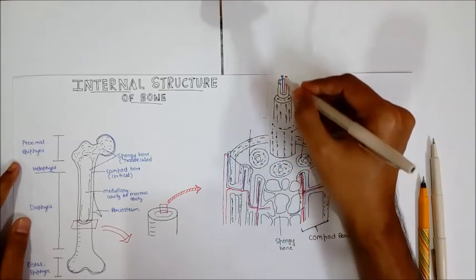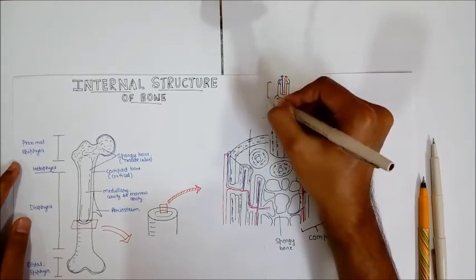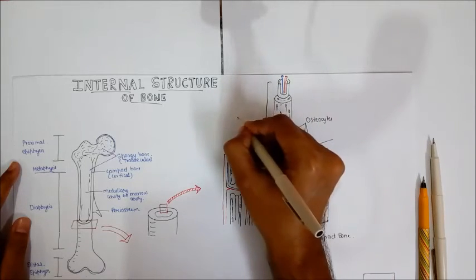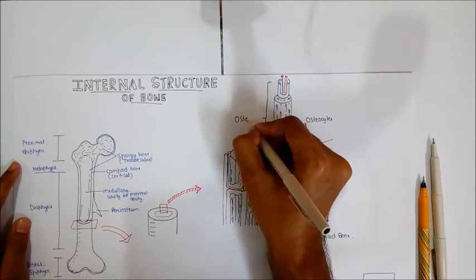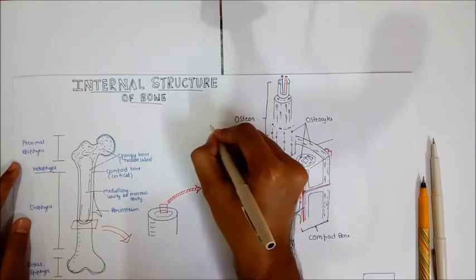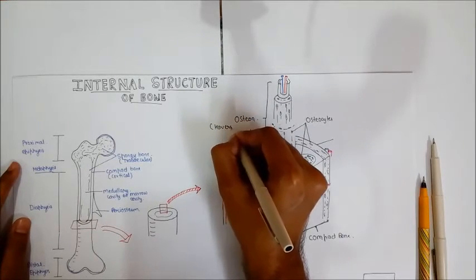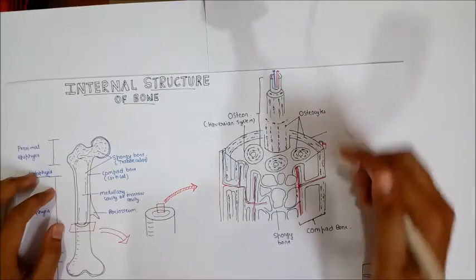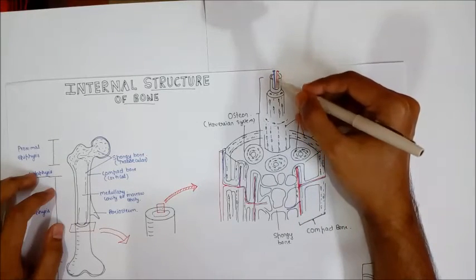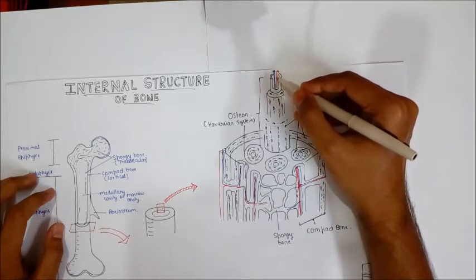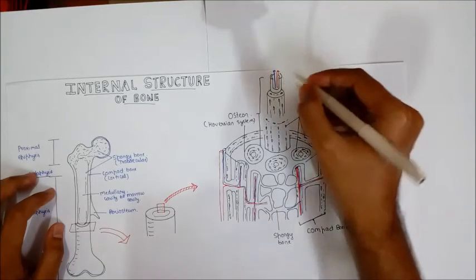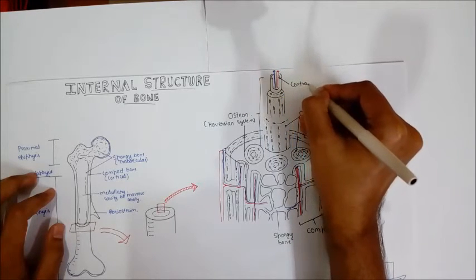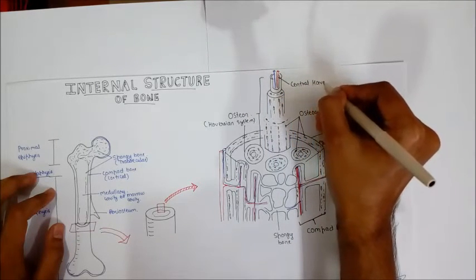When you pull one of these units out, this is how it appears. This is the osteon or Haversian system. At the center of this osteon there is a hollow cavity called the central Haversian canal.